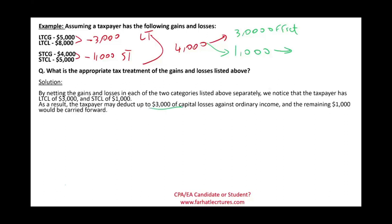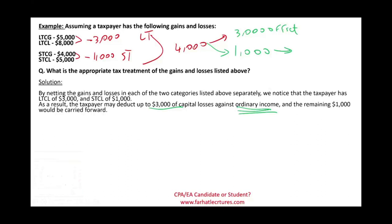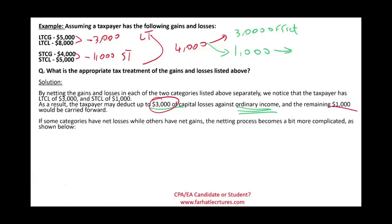The taxpayer can deduct $3,000 of capital loss against ordinary income — that's important and it's a good thing. For example, a person who incurs losses on stock trading can use this $3,000, and the remaining $1,000 would be carried forward.